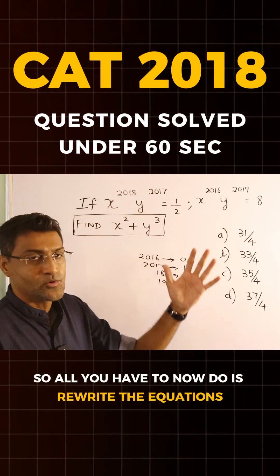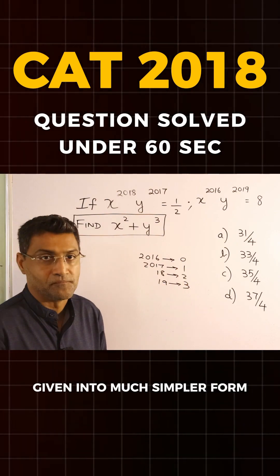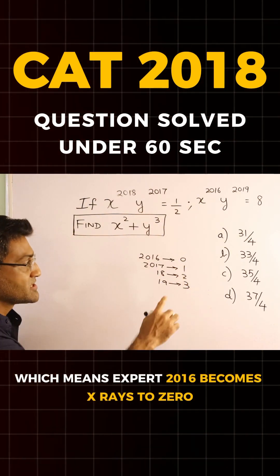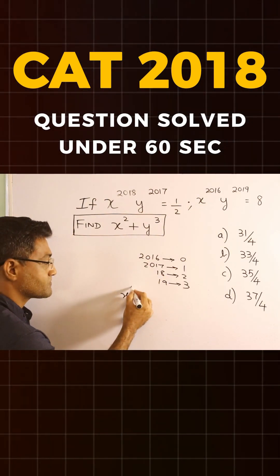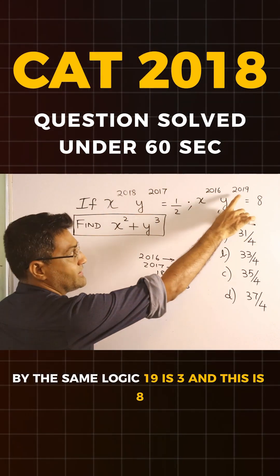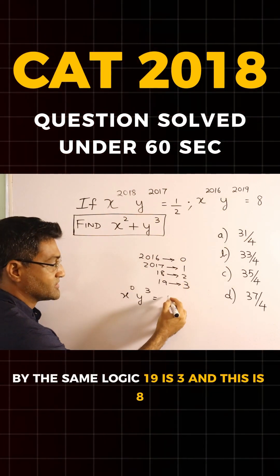So all we have to now do is rewrite the equations given into much simpler form, which means x power 2016 becomes x raised to 0. By the same logic, 19 is 3, and this is 8.